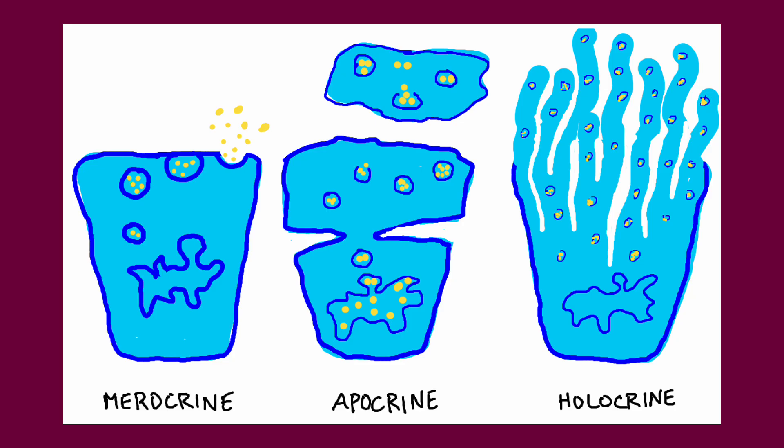The substances that are made within the acinar, or secretory cells, are released in several different ways. Merocrine secretions are basically exocytosis — products are packaged into vesicles that adhere to the cell membrane and then release their product into the ductal system. The pancreatic digestive enzymes are released by this merocrine secretion; that's a good example.